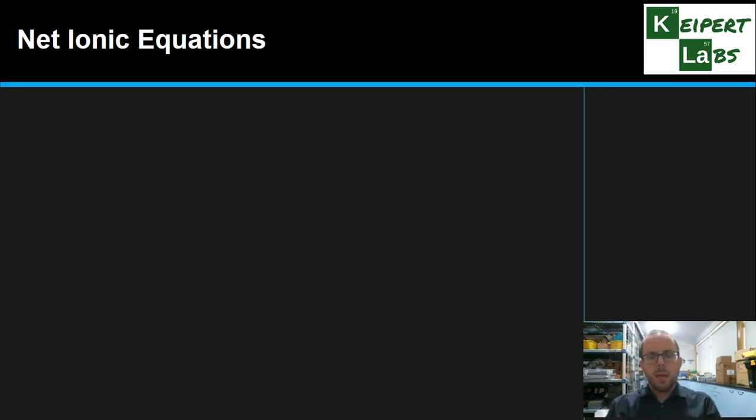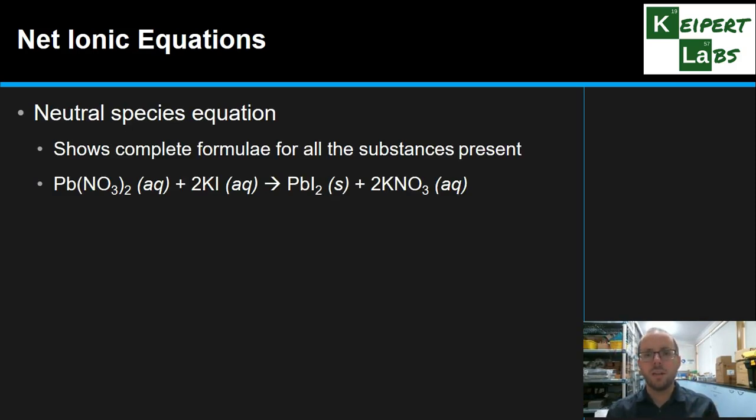And so what we want to be able to do is write a meaningful chemical equation to describe this process. But I'm going to introduce you to a particular type of equation that we tend to use that keeps things just that little bit quicker and simpler. So the kind of equation that you're used to writing is technically known as a neutral species equation. We write complete formulae for all the substances that are present in that mixture. So we'd write the lead nitrate formula, potassium iodide formula, the lead iodide and potassium nitrate formulas as our products.